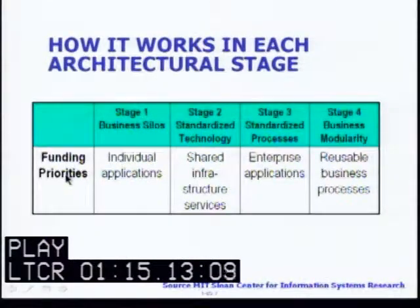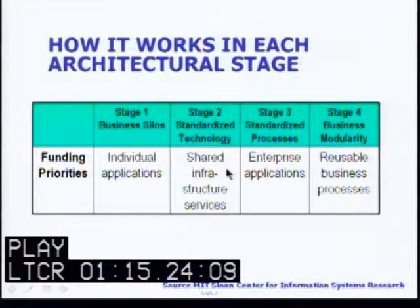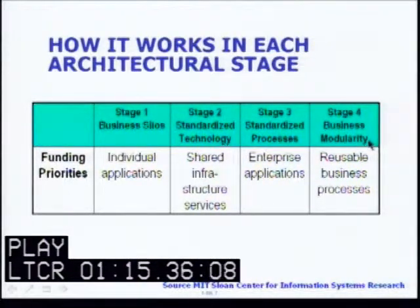Considering funding priorities: stage one, business silos, addresses individual applications; stage two, standardized technology, looks at shared infrastructure services; stage three, standardized processes, looks at enterprise applications; and stage four, business modularity, looks at reusable business processes.